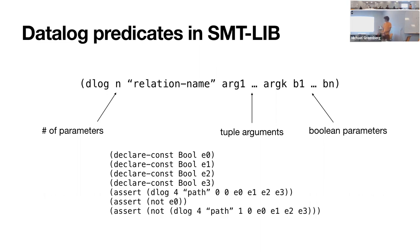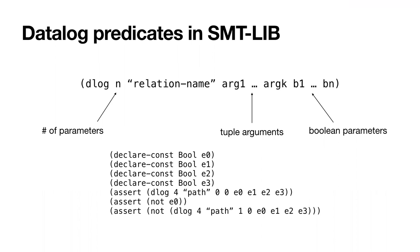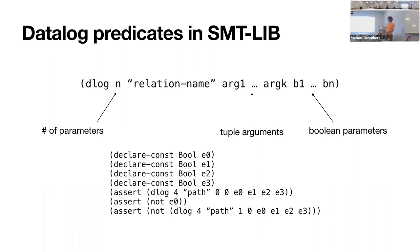We can start writing SMT formulas that look like the earlier example. We have Boolean parameters representing the edges, and then we can write different predicates saying what's reachable under this graph.